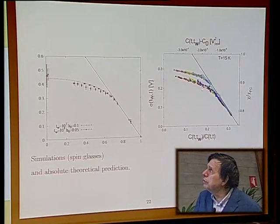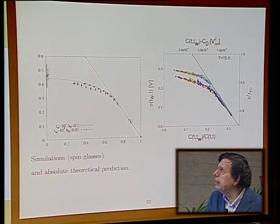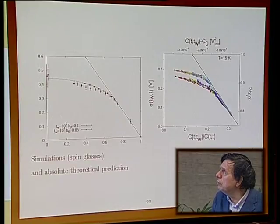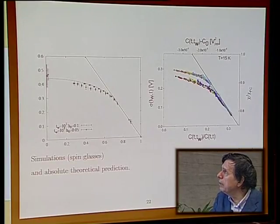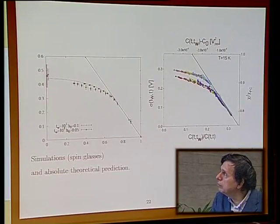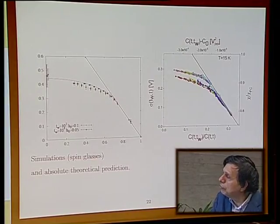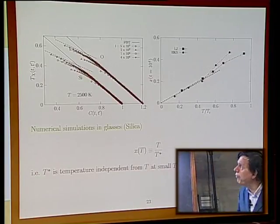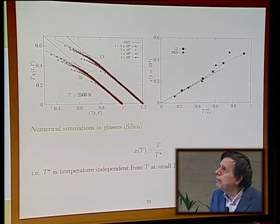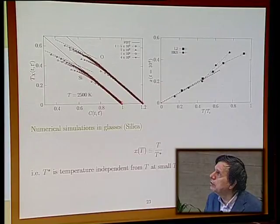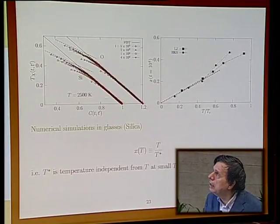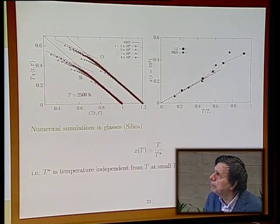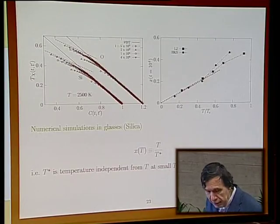The two curves correspond to different ways to do the analysis. It's quite clear that you have a region which corresponds to one temperature, and a region that corresponds to another temperature, to a continuous range of temperature. The same type of effects can be measured in numerical simulations of glasses. This is silica. This is the same type of curve, and you have one region corresponding to one temperature and a region corresponding to another temperature.